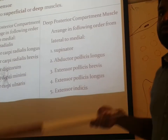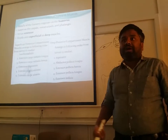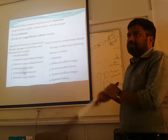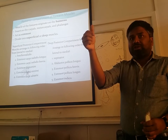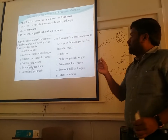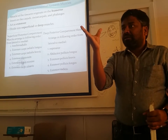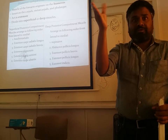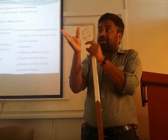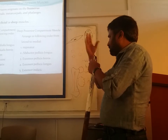The five deep muscles of the extensor compartment are: supinator, which does supination; abductor pollicis longus; extensor pollicis brevis; extensor pollicis longus — two muscles for extension of the thumb — and extensor indicis for the index finger. There are so many muscles for the thumb because the thumb is such an important part. In the hand itself there are also many more muscles for the thumb.